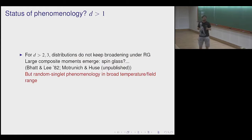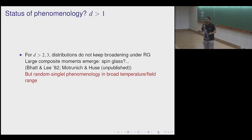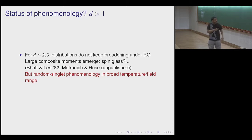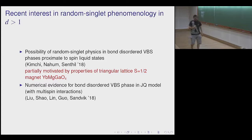What is the status of this phenomenology in d > 1? It's far more confused. For SU(2)-symmetric Heisenberg antiferromagnets, although the original Bhatt-Lee computation was valid in the temperature range where it was done, if you ask whether it's really flowing to infinite disorder there's a lot of unpublished work suggesting it's not — you get local moments that form larger and larger spins, and perhaps the ultimate low-energy fate is some kind of spin glass.